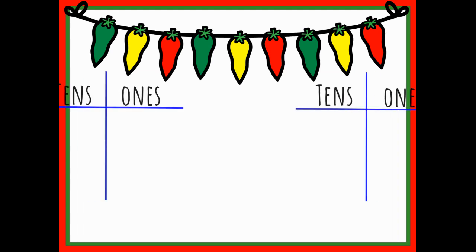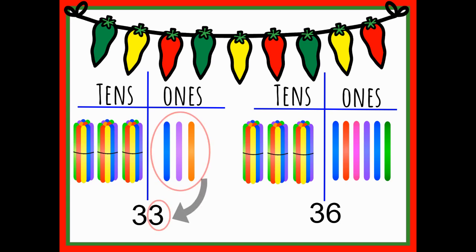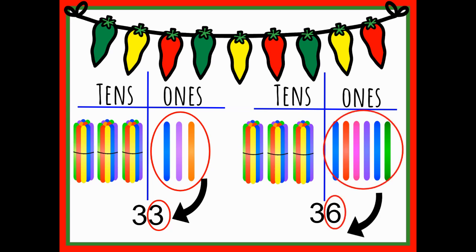Let's try another one. On the left is the number 33 — three groups of 10, three ones — and on the right, three groups of 10 and six ones. Take a look at my tens. I see that they're equal, so that doesn't really help me out. I'm going to go ahead and focus on the ones. On the number 33, I have three ones, and the number 36, I have six ones. I know that six is greater than three. Therefore, 36 is my greater number, and 33 is less than 36.